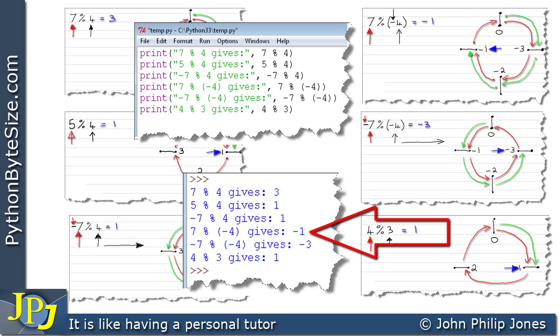This one, minus 7 modulus minus 4, should give minus 3, which is precisely what I worked out here. And the last one, 4 modulus 3 gives 1, which is this sketch, and we can see that gives us 1.